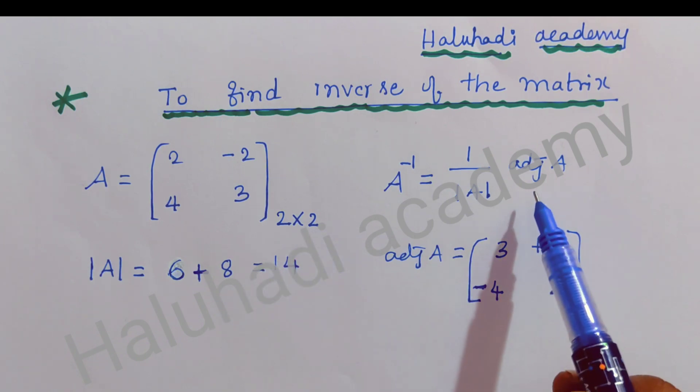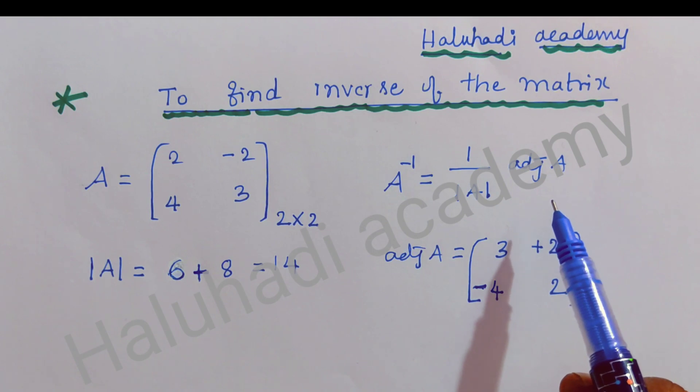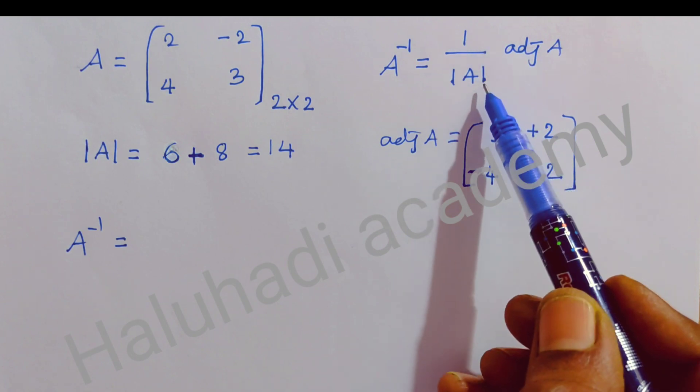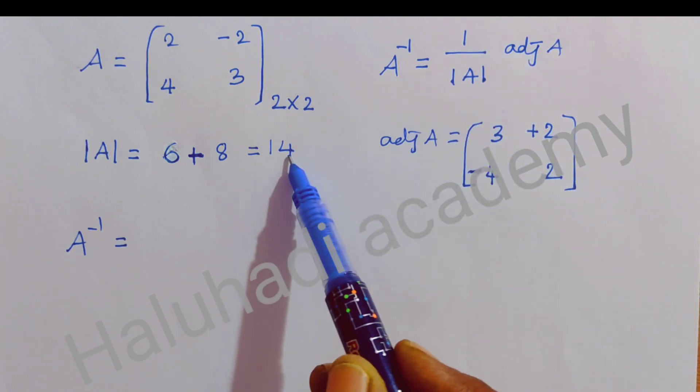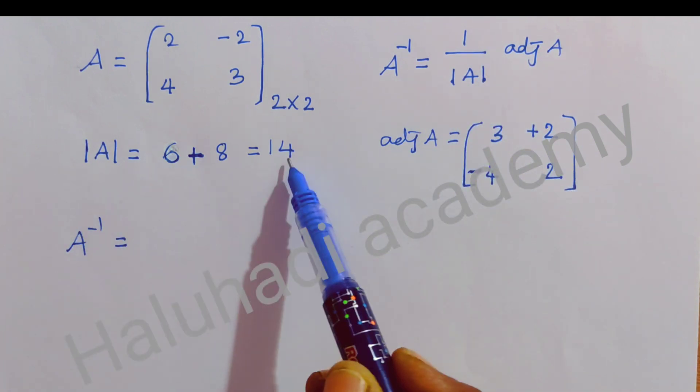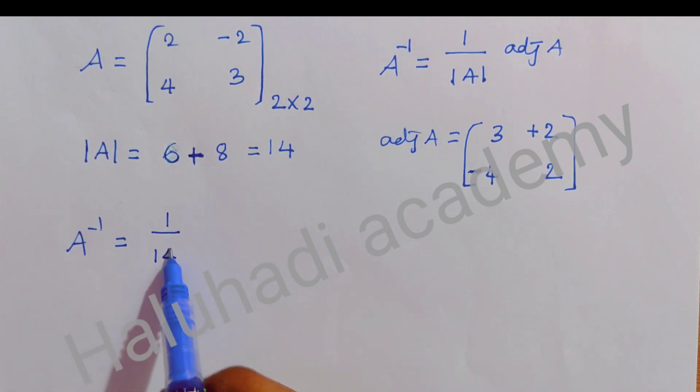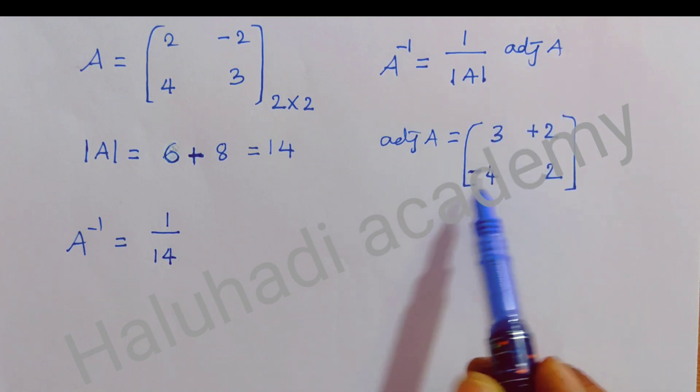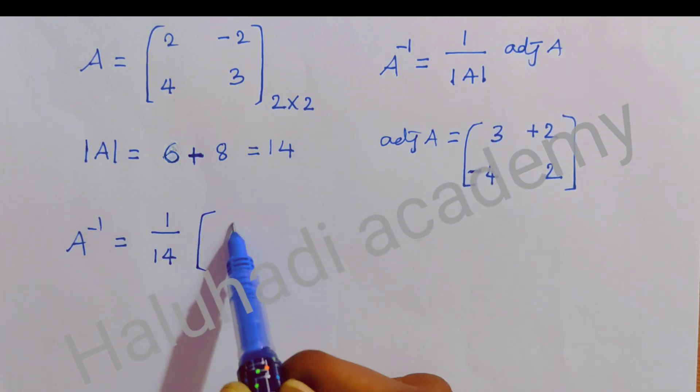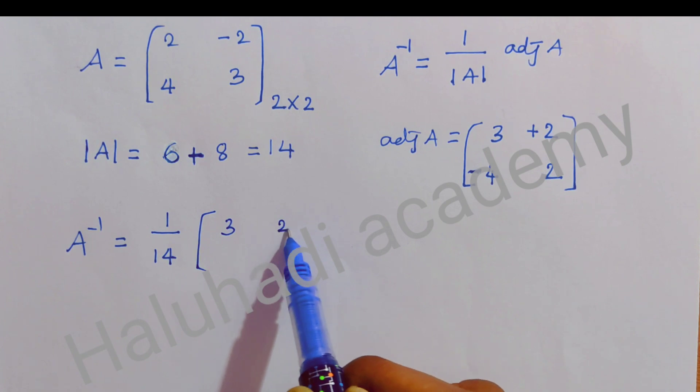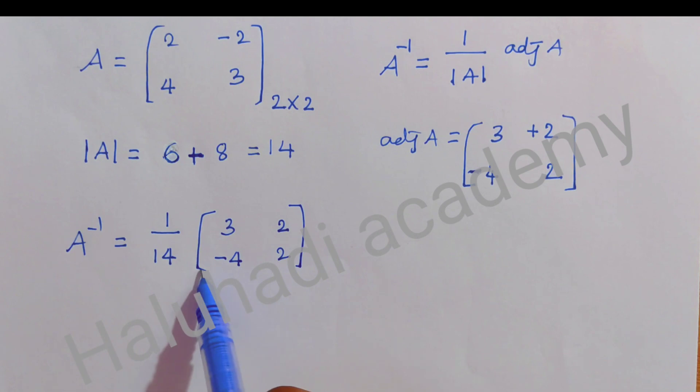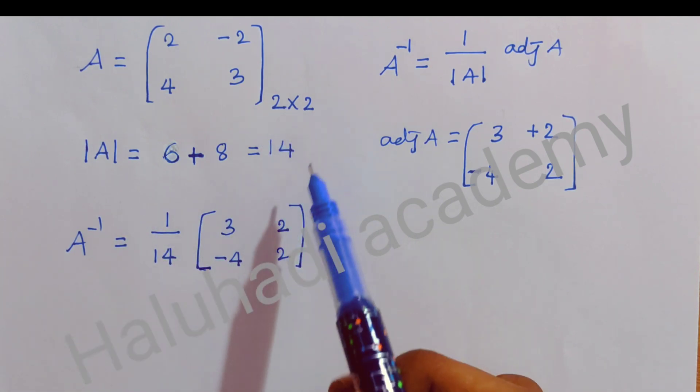Now we substitute in the formula. A inverse equals 1 divided by determinant A. Determinant A value is 14, so 1 divided by 14. Then adjoint A - substitute adjoint A here: 3, 2, -4, 2. And this is A inverse of the order 2×2 matrix. This is very simple method.